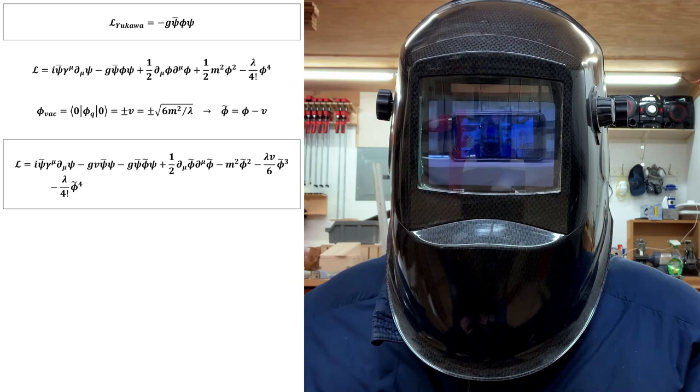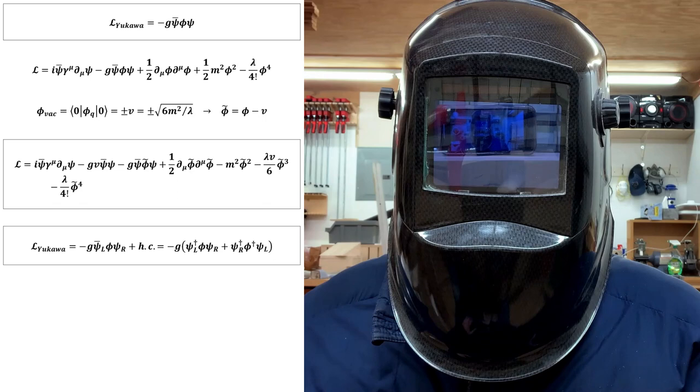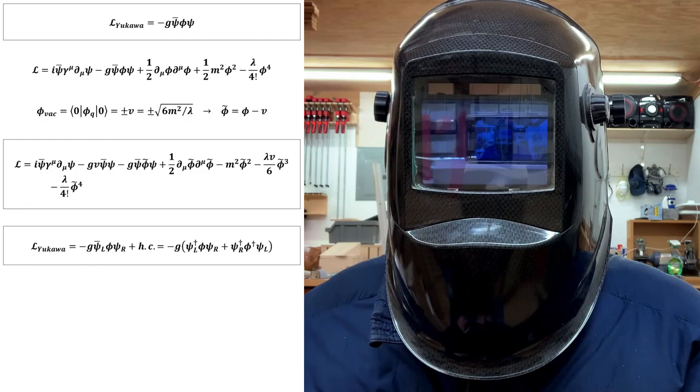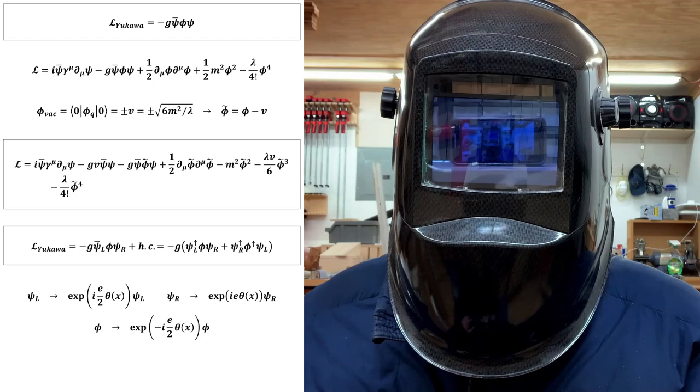Perhaps it isn't immediately obvious how to generalize the Yukawa interaction Lagrangian to gauge invariance. The most common way of doing it actually makes use of Weyl fermions with a coupling to the scalar field of this general form. If we take phi to be a single component complex field and the fermions to have only one isospin component, then this Lagrangian is invariant under this U(1) gauge transformation. This is reminiscent of how weak hypercharge works in the QEW sector of the standard model.